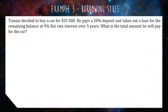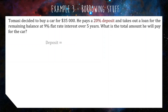For our last revision question, we're doing more financial maths, but this one is borrowing rather than investing. Tomasi decided to buy a car for $35,000. He pays a 20% deposit and takes out a loan for the remaining balance at 9% flat interest over five years. What is the total amount he will pay for the car? I encourage you to pause and have a go first. The first thing to be aware of is that you're not going to pay interest on the deposit — that's why you pay a deposit. It reduces your loan, so you pay less interest. So the first thing I'll be doing is finding the 20% deposit.